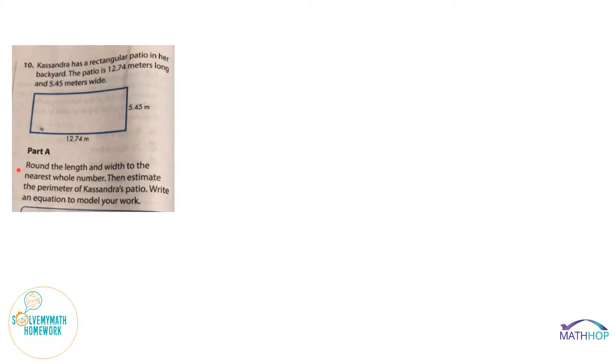It wants us to round the length and width to the nearest whole number and estimate the perimeter of Cassandra's patio. And then of course it wants us to write an equation to model our work.